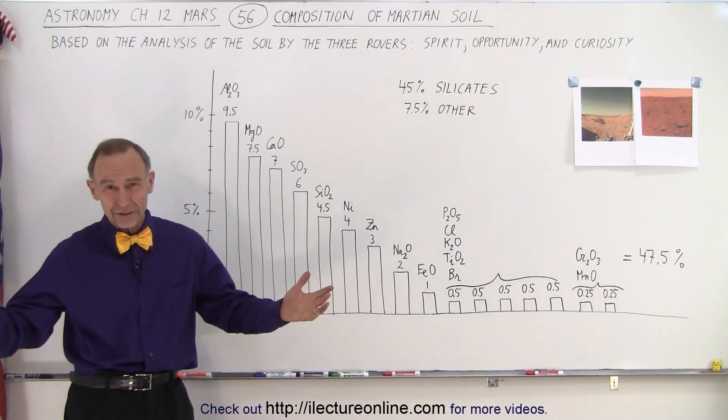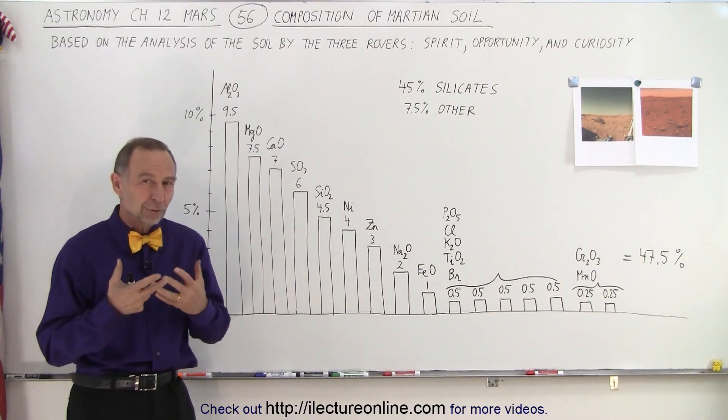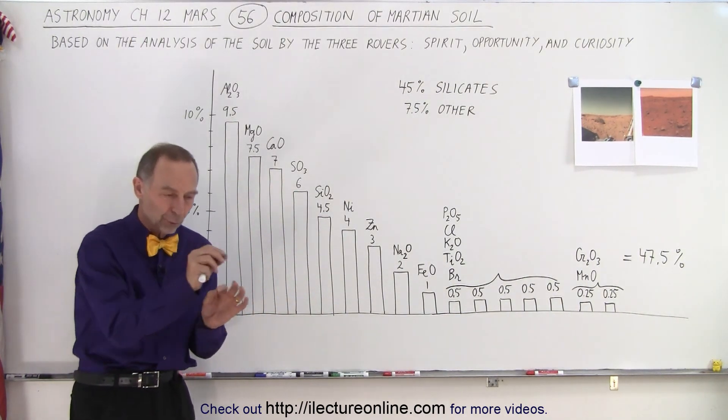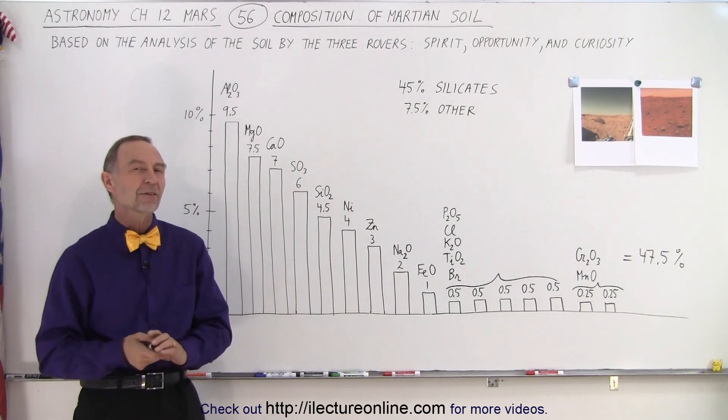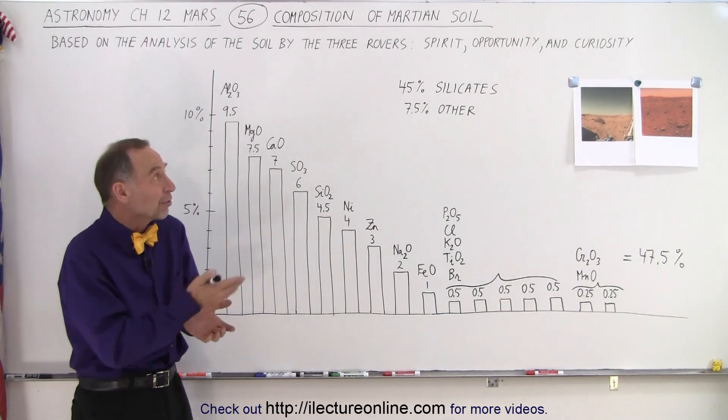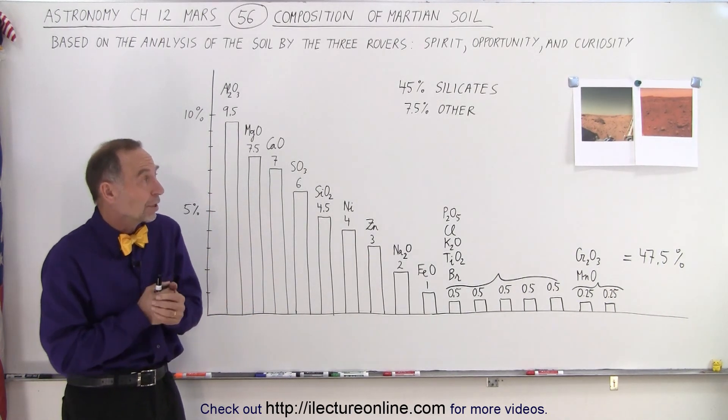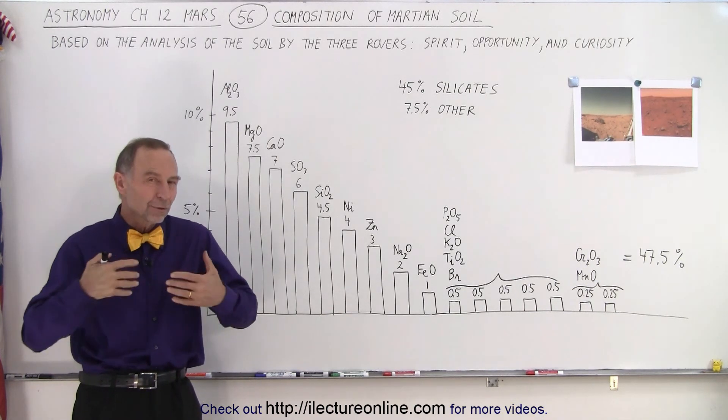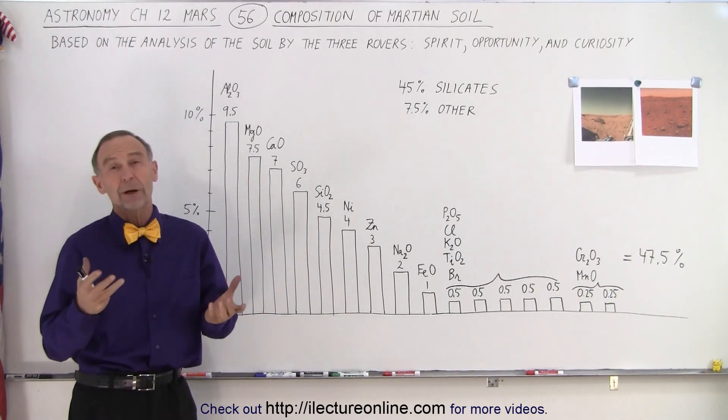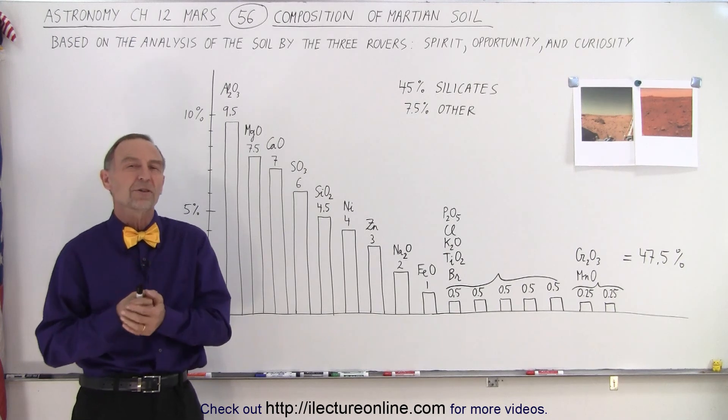Of course, Mars is a big planet and we've only sent a few landers and rovers on the surface to check out specific spots, but by combining the information of the three rovers Spirit, Opportunity, and Curiosity, we've been able to figure out pretty well what the Martian soil is made out of.